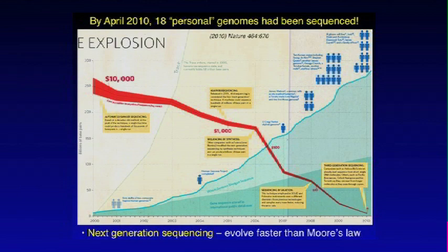Only a few years after the first draft genome was released — which was a compilation of several different people, kind of an average genome — the first individual person's genome was sequenced in 2007, and the next one, Jim Watson's, was released in 2008. From $3 billion, Jim Watson's genome cost something on the order of $400,000, so that's already a tenfold decrease.